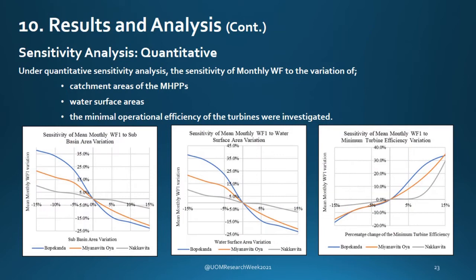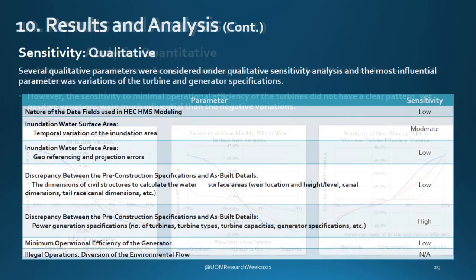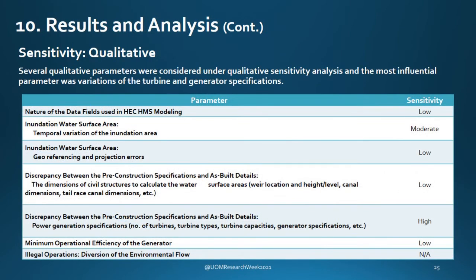The sensitivity analysis was done both quantitatively and qualitatively. Under the quantitative sensitivity analysis, catchment areas of the mini hydropower plants, water surface areas, and minimum operational efficiencies of the turbines were varied, and the corresponding changes in water footprint values were examined. Mini hydropower plants with smaller areas were much more sensitive to both catchment and water surface area variation, and the sensitivity of minimum operational efficiency was complex due to the non-linear relationship of turbine efficiency and required flow. For the qualitative sensitivity analysis, the most pressing concern was the discrepancy between pre-construction and post-construction hydropower plant specific data, since any difference in turbine and generator specifications or canal configuration may significantly alter the results.